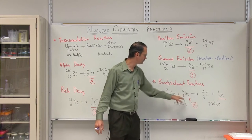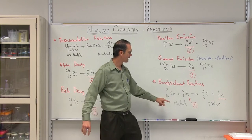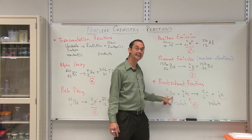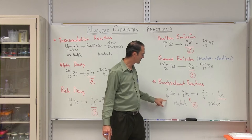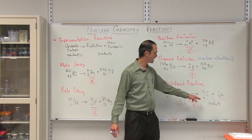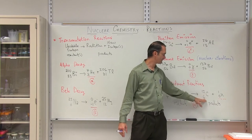So for example, if you have two reactants, a beryllium and an alpha particle happens to hit it, we're going to have a four plus two is going to give us six protons. And those six protons may end up giving us a carbon, for example.